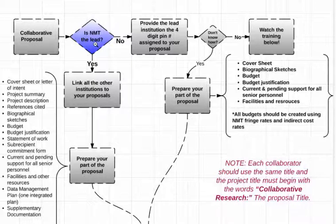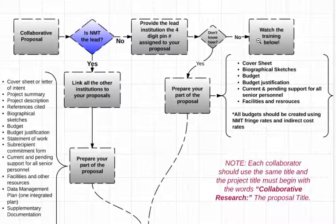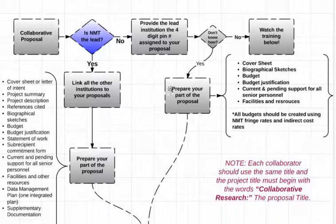When we are not the lead institution, you need to provide the lead institution a four-digit PIN number that you assign to your proposal. If you don't know how to do this, there is another video with a link below that shows you how. You need to send that four-digit PIN number to the lead institution and they will use it to link your proposal to theirs — this is very important.